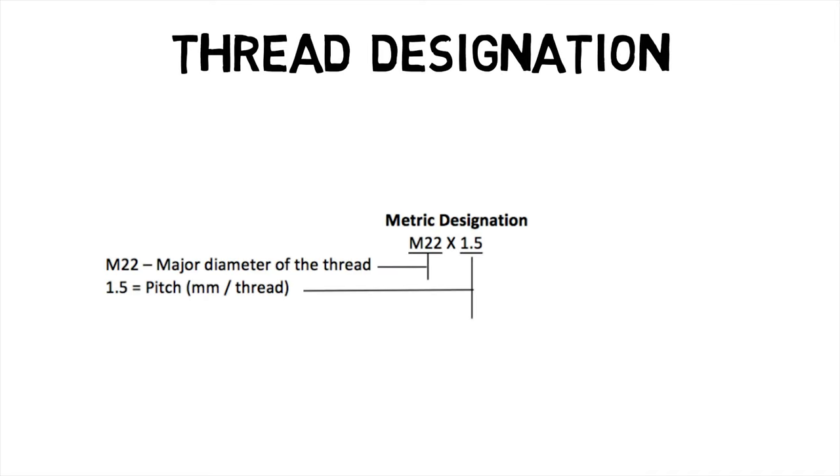Thread Designation is an M number indicating the major diameter of the thread, followed by the pitch measured in millimeters per thread. For example, an M22 x 1.5 screw has a nominal outer diameter of 22 millimeters and each thread is 1.5 millimeters thick.